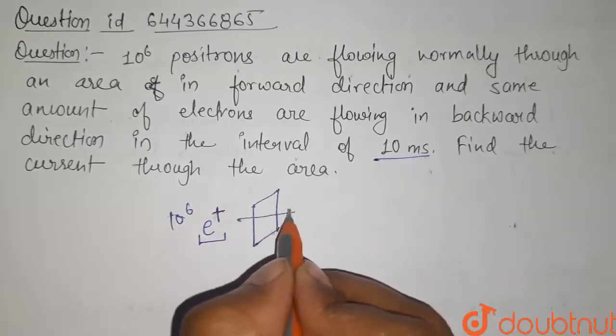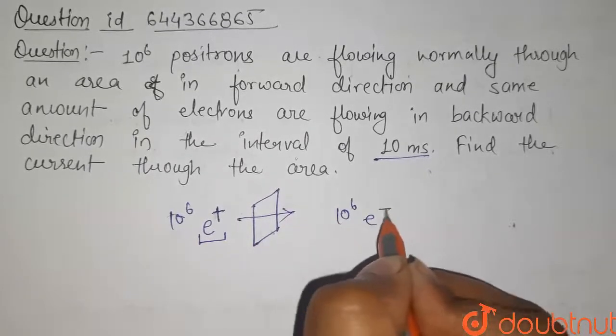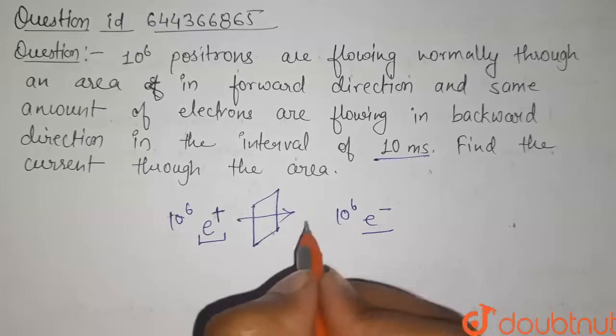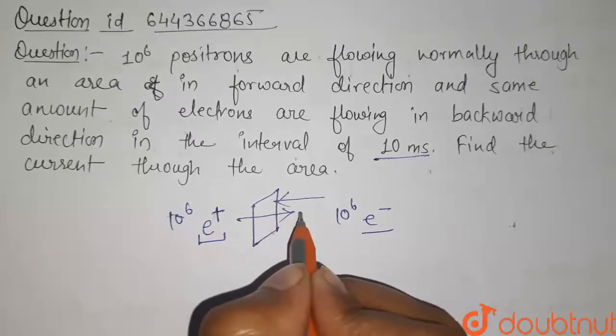These positrons are flowing in the forward direction. The same number of electrons, which have negative charge, are flowing in the backward direction, that is, in the opposite direction.